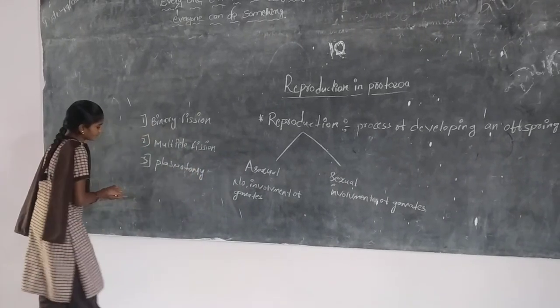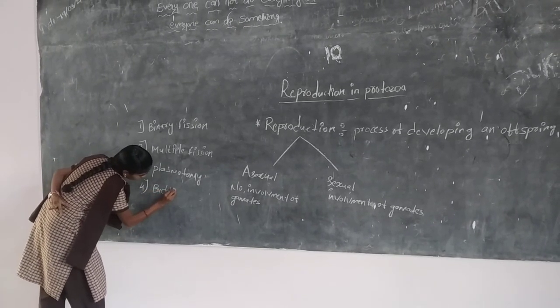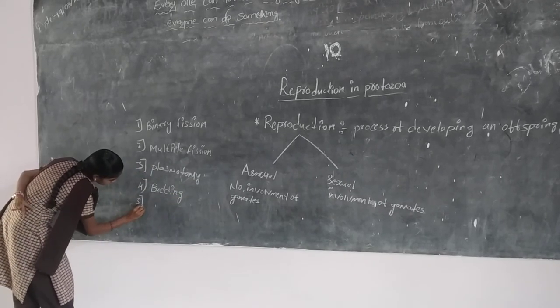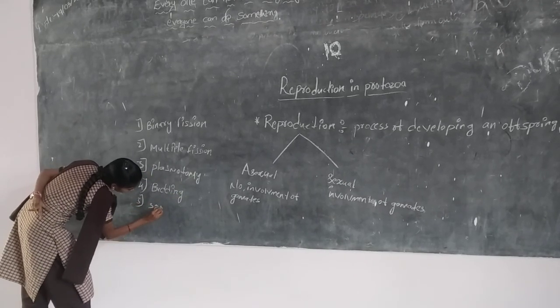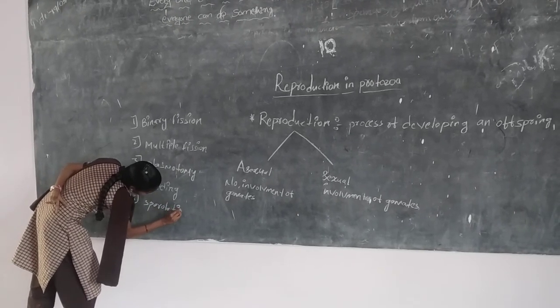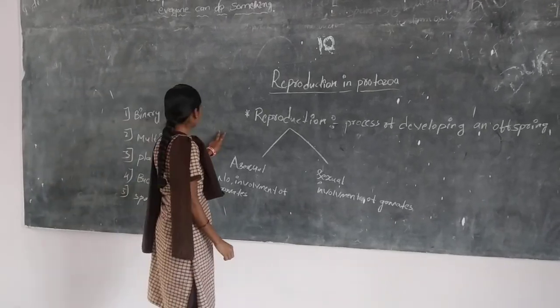Fourth one is budding. And last fifth one is sporulation. As well as in sexual reproduction also there are five types.